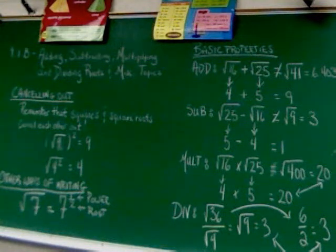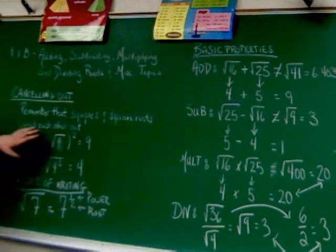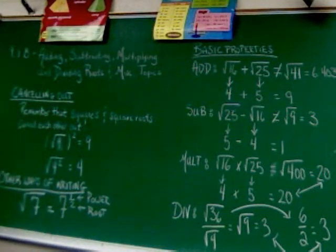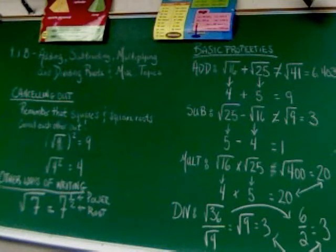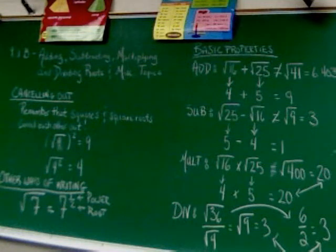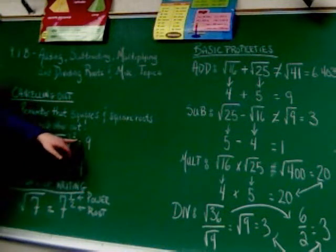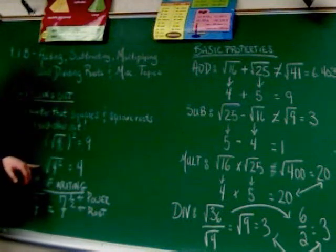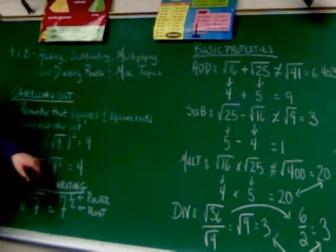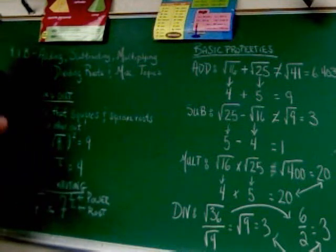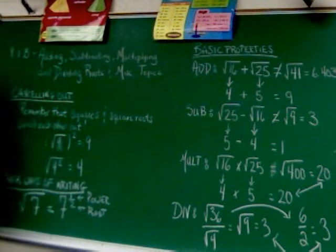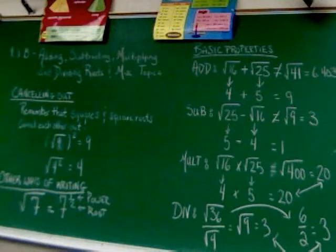The first thing I want to remind you is about canceling out inverse operations. You have to remember that squares and square roots cancel each other out. They're opposites, just like addition and subtraction, and multiplication and division. So, the square root of 9, then squared, comes back to 9. If you square 4 and then take the square root, you come back to 4. Those two operations cancel each other out, so just cancel them out.